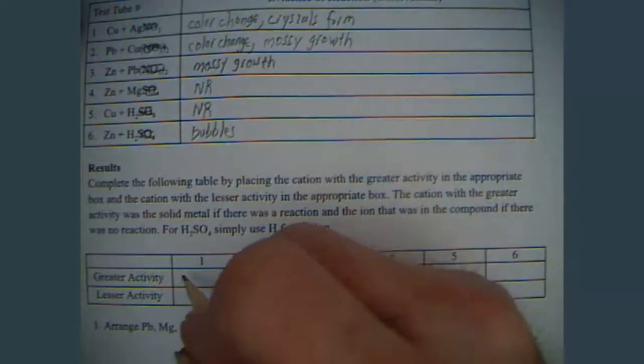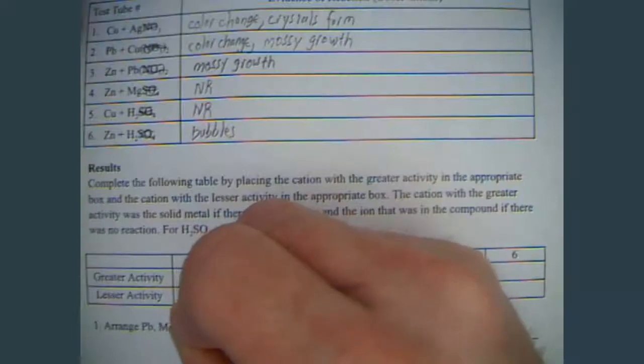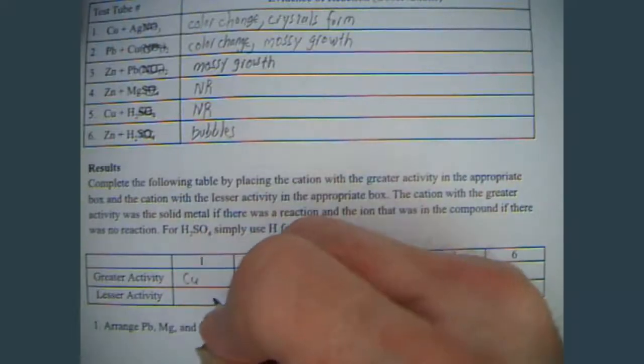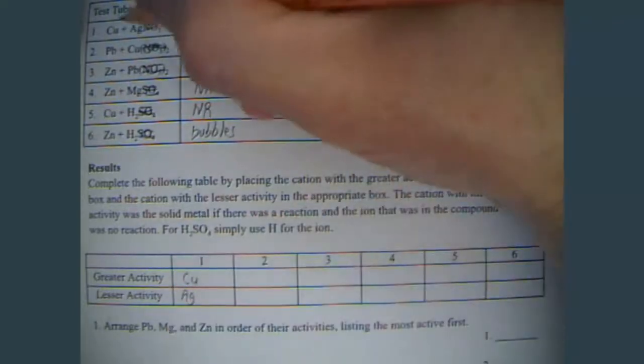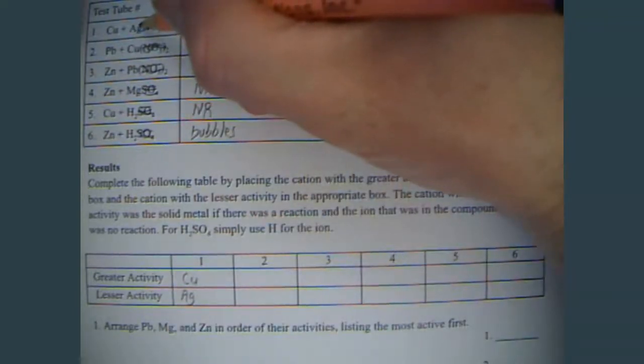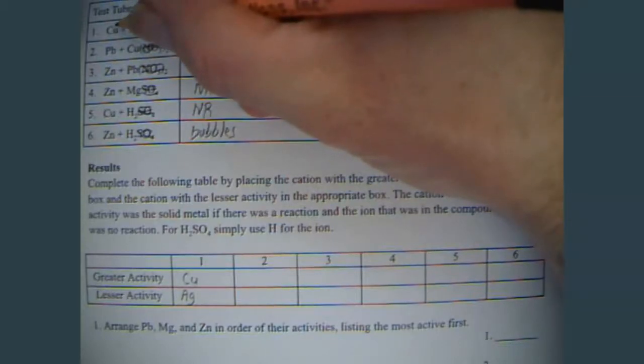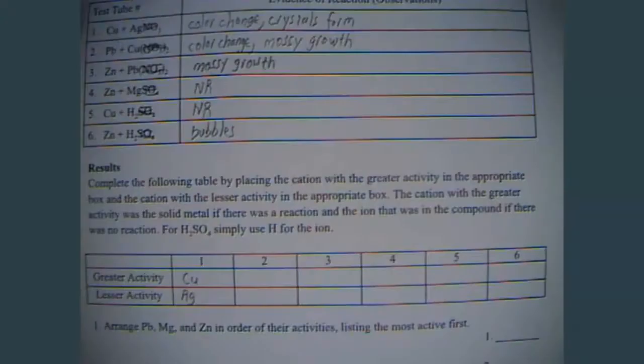So, the greater activity then down here is going to be copper. And then the lesser activity was the silver. Because, the copper was able to come over, kick the silver out of the solution and take its place. So, that shiny stuff that's growing on the copper is actually silver powder.